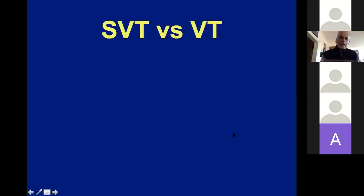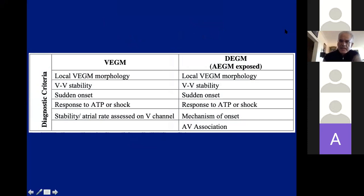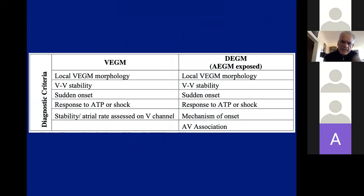I tried to subdivide this into several groups of questions that you can answer when interpreting electrograms. One of the key things is differentiation between SVT and VT, and we have investigated this in the past. We actually did a study on how well fellows do at differentiating between SVT and VT, and that paper was published a couple of years ago in the Heart Rhythm Journal.